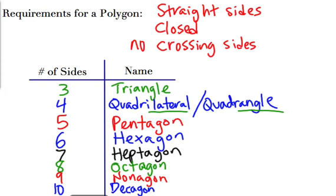These are the ones you need to know: triangle, quadrilateral, pentagon, hexagon, heptagon, octagon, nonagon, decagon. Remember: a polygon has straight sides, is closed, and has no crossing sides. So a circle is not a polygon because the sides aren't straight.